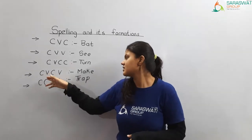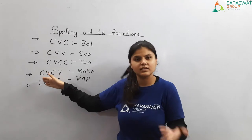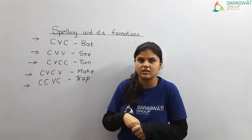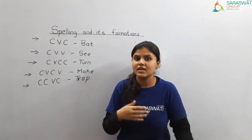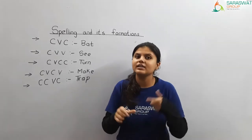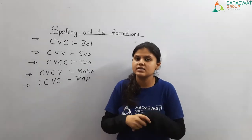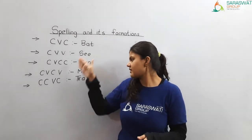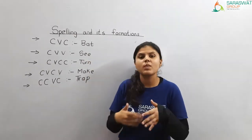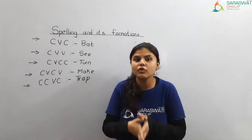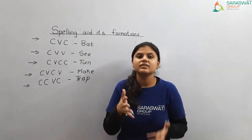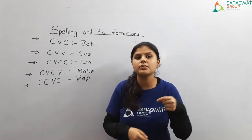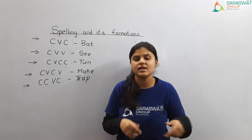Then C-V-C-V: C being the consonant and V being the vowel. The word is MAKE: M being a consonant, A being a vowel, K being a consonant, and E is a vowel. These are the examples by which basic words are formed with the help of consonants and vowels, which you need to practice to improve your spellings.